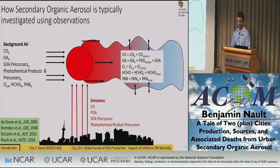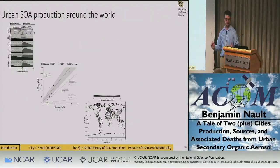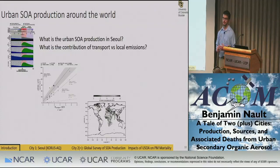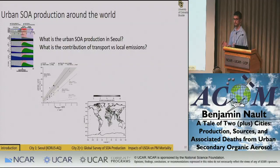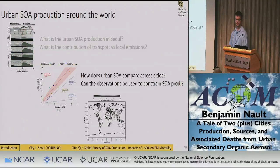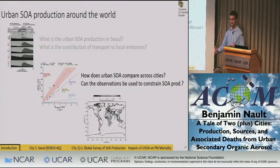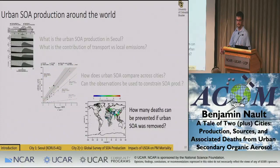With this conceptual model in mind, I can introduce the two projects I've been working on. First, focusing on observations collected over Seoul during the Korean-United States Air Quality Campaign, trying to understand what the urban SOA production in Seoul is as a test case, and in particular the contribution of transport versus local emissions. Then, from those results, looking at how urban SOA compares across cities, how we can use observations to constrain SOA production, and finally, how many deaths could be prevented if urban SOA is completely removed from the atmosphere.